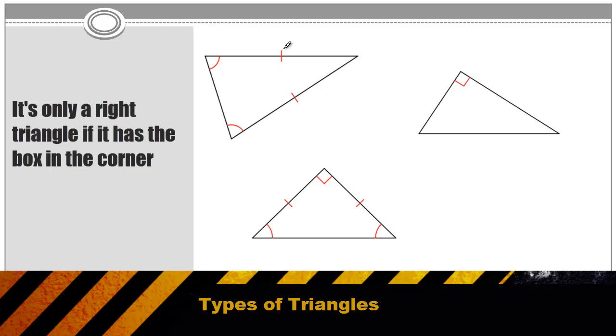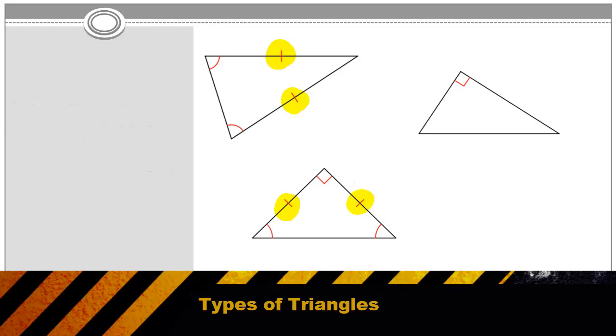In this case, these special markings, these hash marks, those tell you that the two sides are of equal length. The little arcs in the triangle angles, those tell you the angles are equal. And the square box in one of the angles, that's the sign for the angle being 90 degrees, or a right angle.